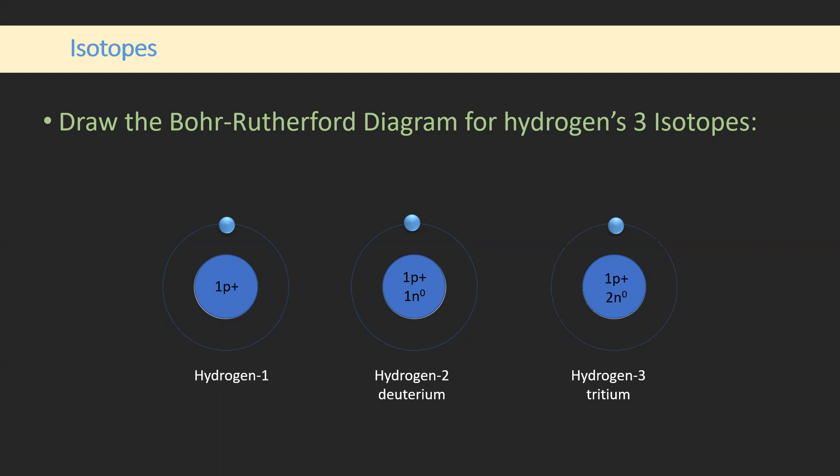Iso meaning same or similar, topes should be place or position. So basically, remember protons give the identity. Same element but different amounts of neutrons, so the nucleus is going to be different.